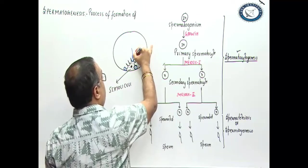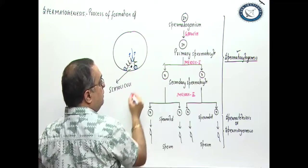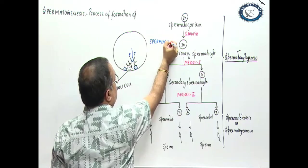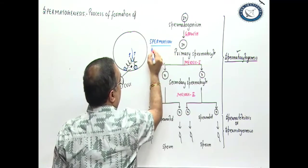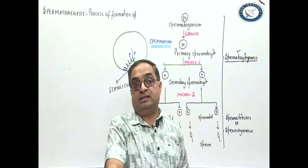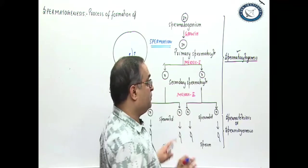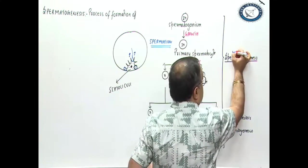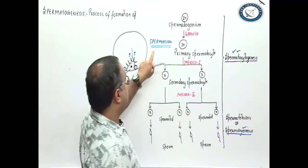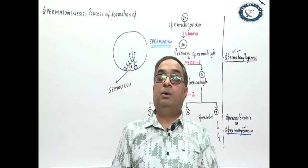Finally, when the sperms are released from the membrane of Sertoli cell into the lumen of the tubule, that process is called spermiation. What is spermiation? Release of sperms from the membrane of Sertoli cell into the lumen of seminiferous tubule. Please make yourself acquainted with these terms. This is spermatocytogenesis, this is spermiogenesis and this is what is spermiation. That was about the process.